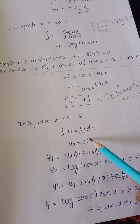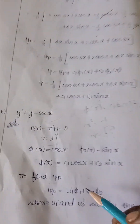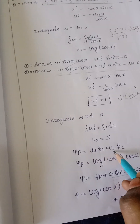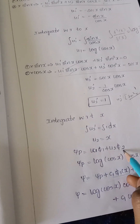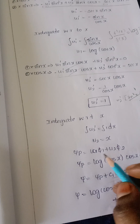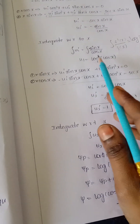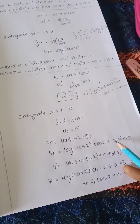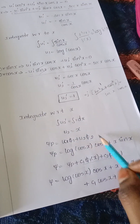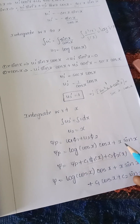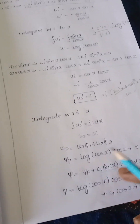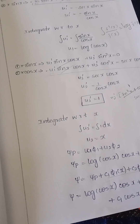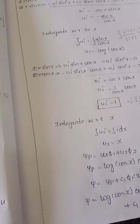Integrating u₂' = 1 gives u₂ = x. Therefore, the particular solution is ψ_p = u₁φ₁ + u₂φ₂ = log|cos(x)|·cos(x) + x·sin(x).